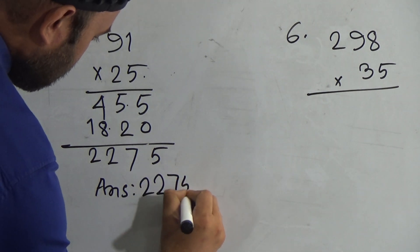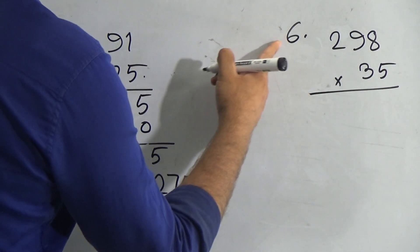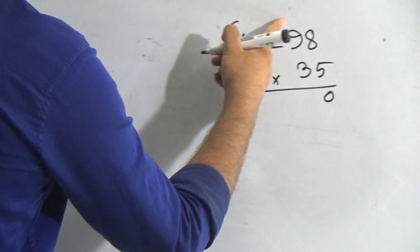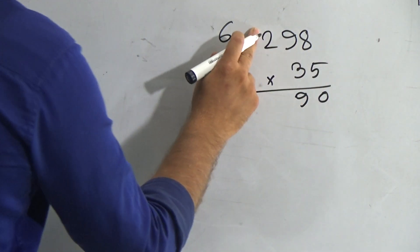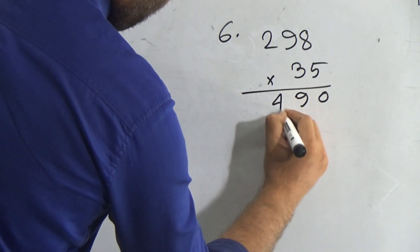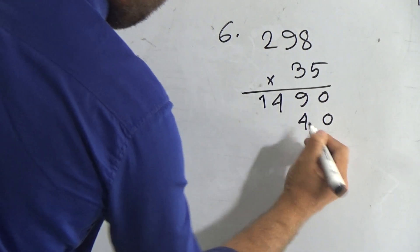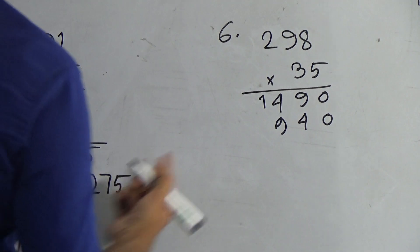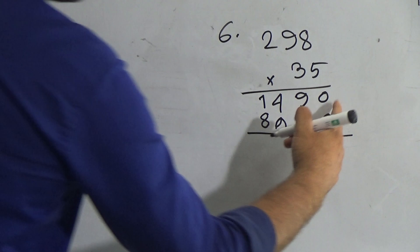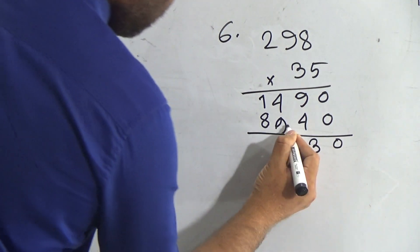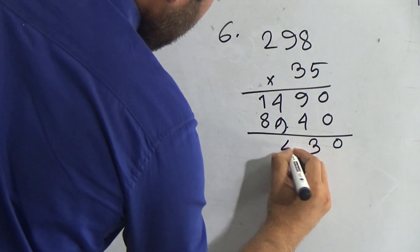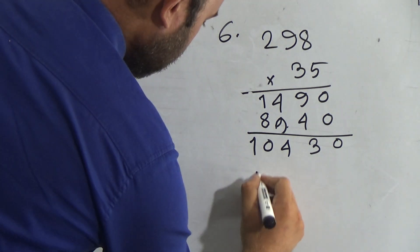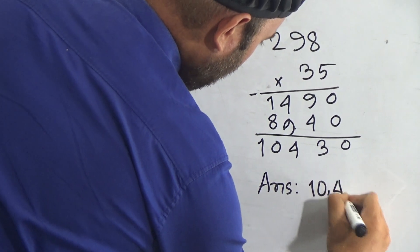Now the last question, number six: 298 multiplied by 35. Five eights are 40, carry four; five nines are 45 plus four is 49, carry four; five twos are ten plus four is fourteen. Now three eights are 24, carry two; three nines are 27 plus two is 29, carry two; three twos are six plus two is eight. Add: zero, nine and four is thirteen; nine and four plus one is fourteen, carry one; eight and one is nine; nine and one is ten. So the answer is ten thousand four hundred thirty.